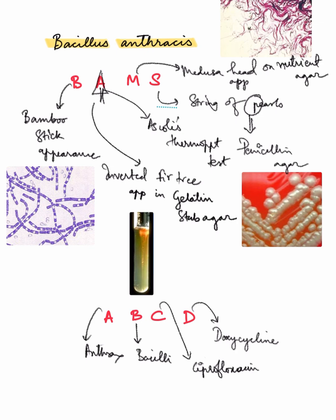Bacillus anthracis is a gram-positive spore-forming bacilli. It is an obligate aerobic bacteria which can cause two forms of diseases: the cutaneous form manifesting as black eschar or malignant eschar, also known as Hyde-Portus disease, and the pulmonary form occurring as hemorrhagic pneumonia, also known as Woolsorter's disease.